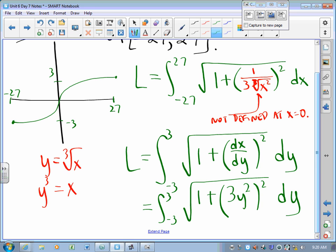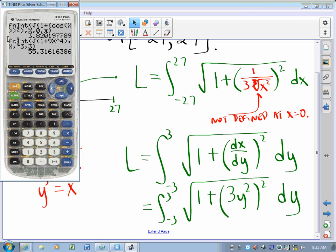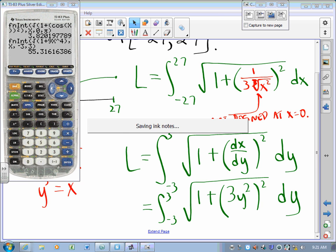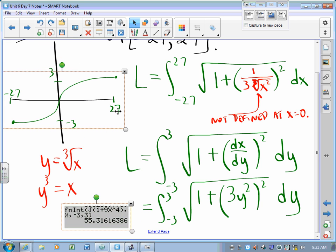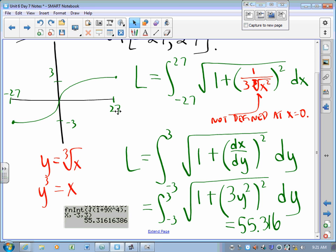And then we just ask our calculator what that is. We say I need the integral of the square root of 1 plus 9x to the 4th. Your calculator doesn't care. With respect to x from negative 3 to 3. And your calculator gives that to you. Just like so. Boom. Three decimal places, truncated or rounded. Excellent.